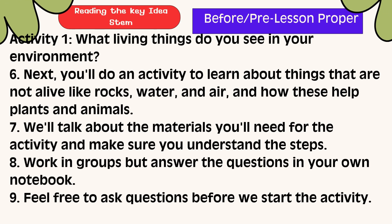Think about how the plants and animals need each other and the place to live. Next, you'll do an activity to learn about things that are not alive — like rocks, water, and air — and how these help plants and animals. We'll talk about the materials you'll need for the activity. Work in a group but answer the questions on your own. Feel free to ask questions before we start the activity.